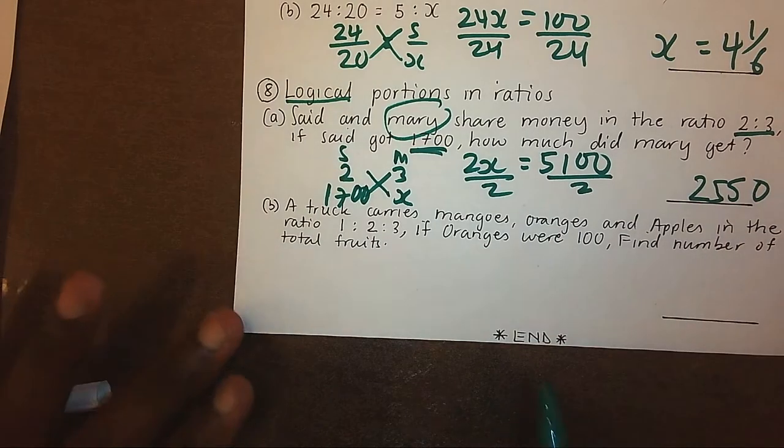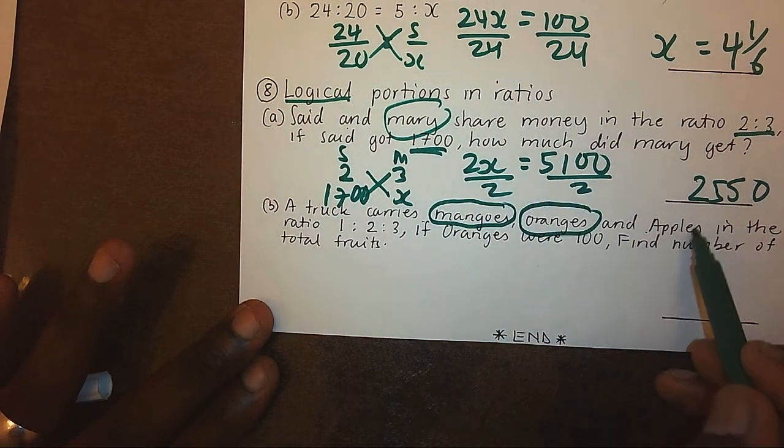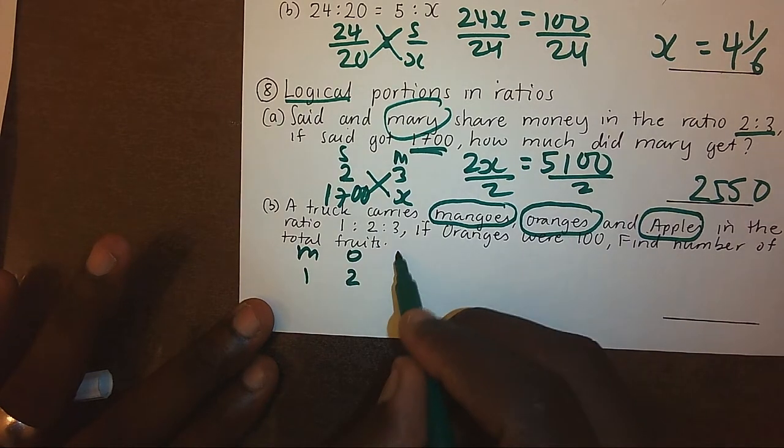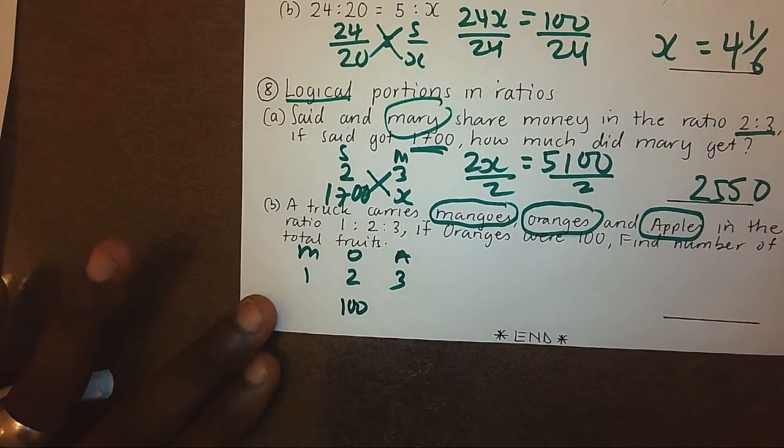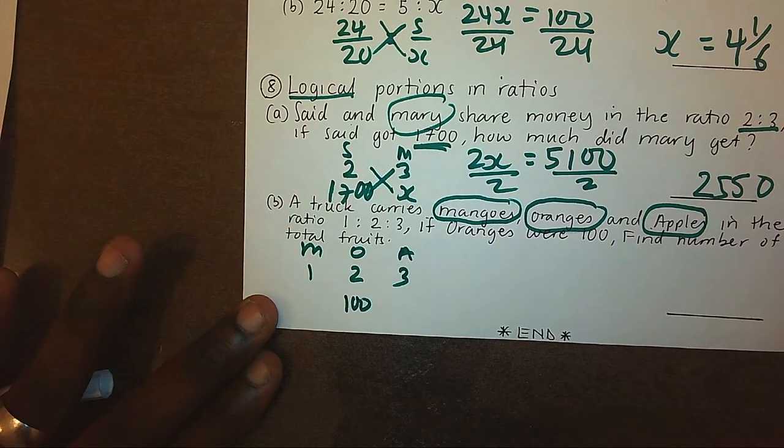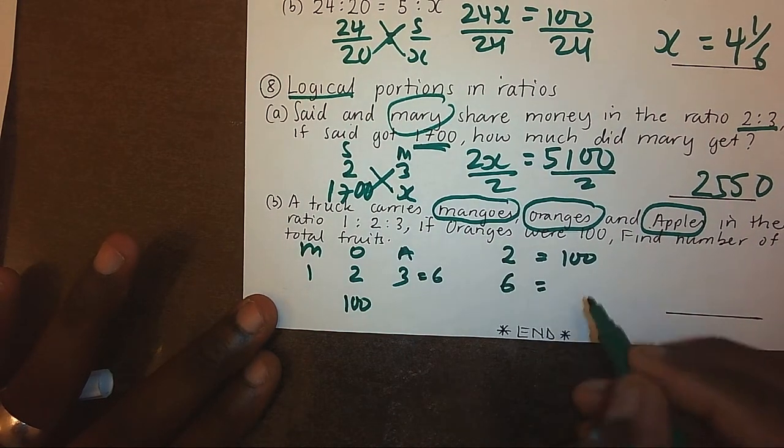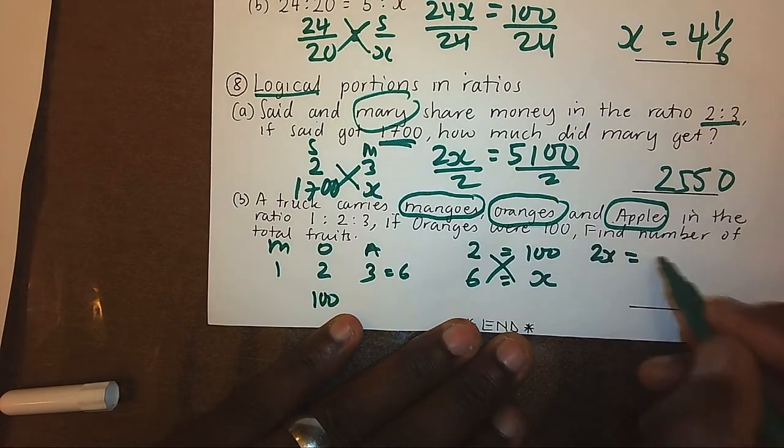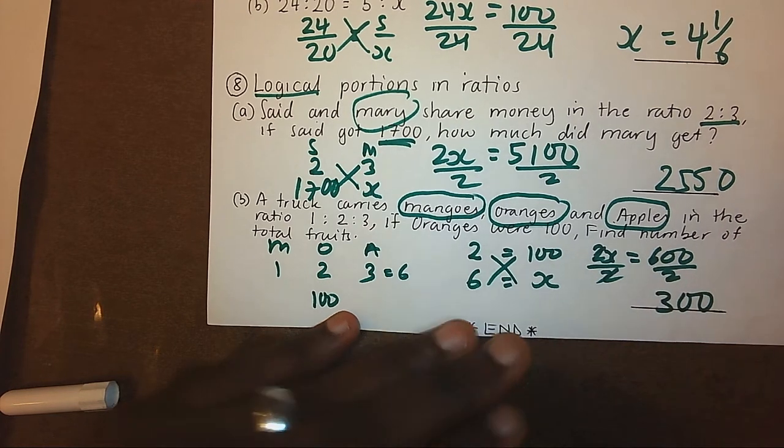Last but not least, a truck carries mangoes, oranges, and apples. For mangoes, I have ratio 1, for oranges, ratio 2, and for apples, ratio 3. If oranges are 100, find the number of total fruits. The total ratio is 6. If orange ratio is 2 giving us 100 fruits, my total ratio 6 gives me x fruits. Cross multiply. 2x equals 600, divide by 2, then my total fruits will be 300.